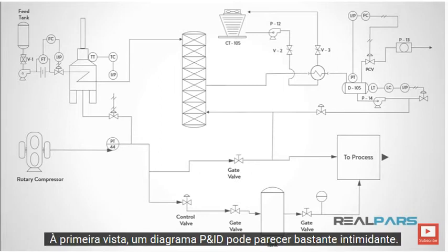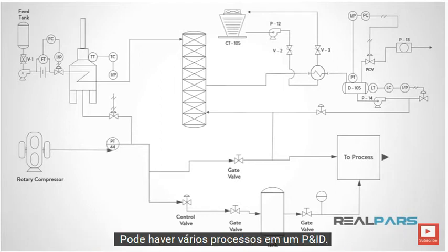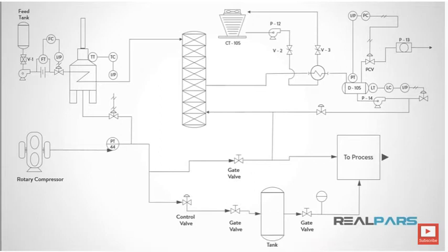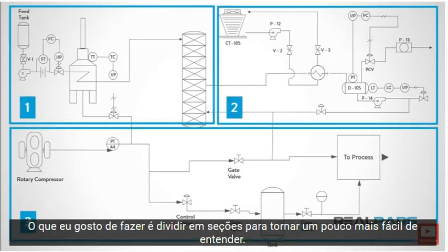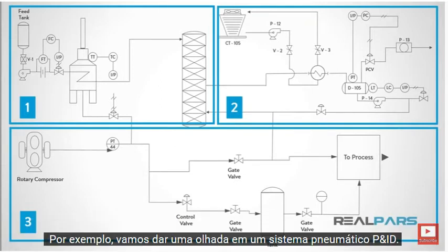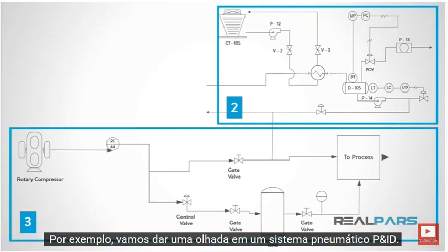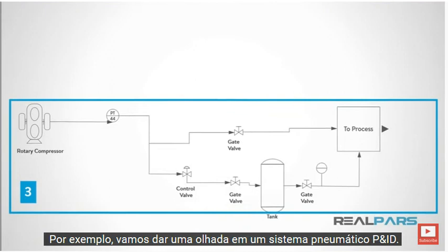At first glance, a P&ID diagram may look pretty intimidating. There can be several processes on one P&ID. What I like to do is break it down into sections to make it a little easier to understand. For example, let's take a look at a pneumatic system P&ID.